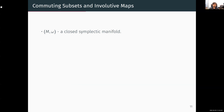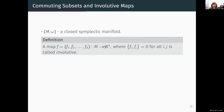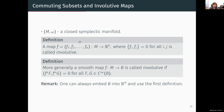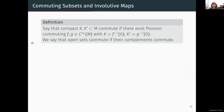To define IVQMs I need to discuss Poisson commuting subsets and involutive maps. Given a map from a symplectic manifold to R^K, we say it's involutive if every pair of its components is Poisson commuting. More generally, a smooth map from a symplectic manifold M to some manifold B is involutive if it pulls back pairs of functions from B to Poisson commuting functions. We say that two compact sets commute if there exist Poisson commuting functions F and G such that K is the zero set of F and K' is the zero set of G.